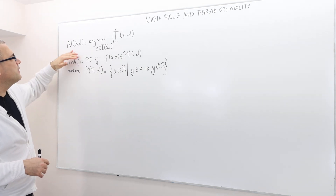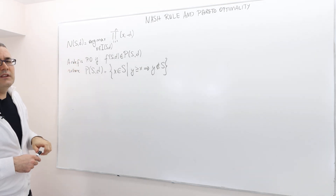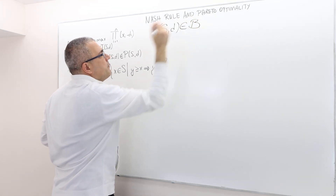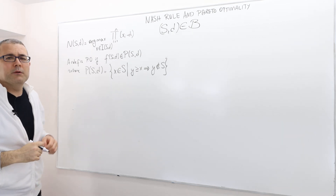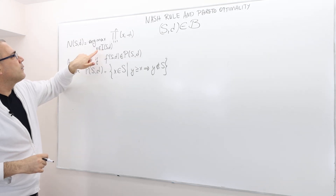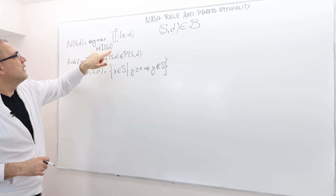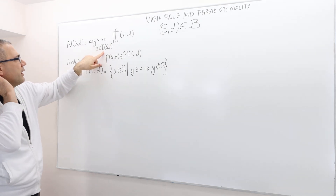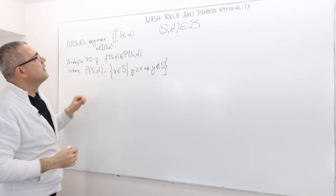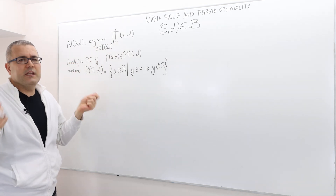If you remember, the notation we used for the Nash rule is NSD. So for any given bargaining problem SD, which is an element of script B — the set of all bargaining problems between N negotiators — it's equal to the argmax where x comes from the set of individually rational payoff vectors, and it basically maximizes the multiplication x1 minus d1 times x2 minus d2, all the way up to xn minus dn.